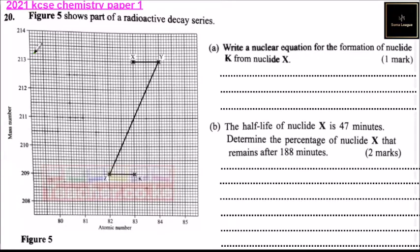Question number 20, Figure 5 shows part of a radioactive decay series. The x-axis represents atomic number, the y-axis represents mass number, with nucleides X, Y, Z, and K.